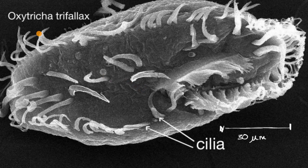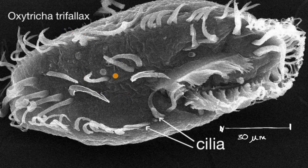Oxytricha trifallax is particularly interesting as a eukaryote because it doesn't just have one nucleus — it can have two nuclei. And within the nucleus, its DNA can be extremely fragmented. Most organisms have a reasonable number of chromosomes; human beings have 23 pairs, which is actually a fairly large number. Oxytricha trifallax could have thousands of chromosomes.